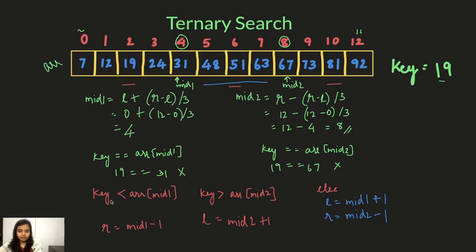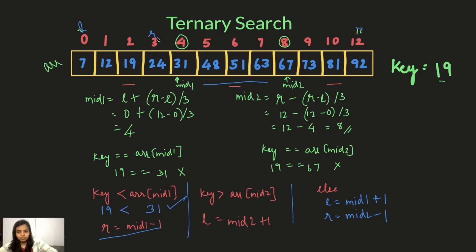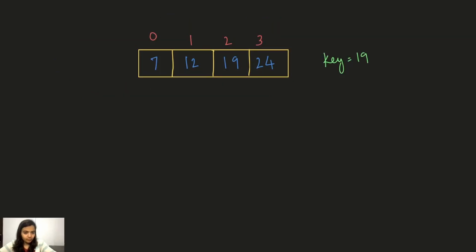Now comparing: is key 19 less than arr[mid1] which is 31? Yes. So we bring the right index down to mid1 − 1, breaking the array there, and apply ternary search on this left sub-array. Here is our new sub-array to work with.